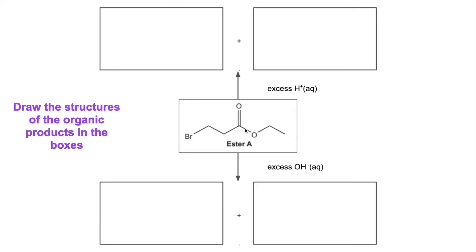When you acid hydrolyse an ester, you get an alcohol and a carboxylic acid group forming here. And so the products are going to be that and that.